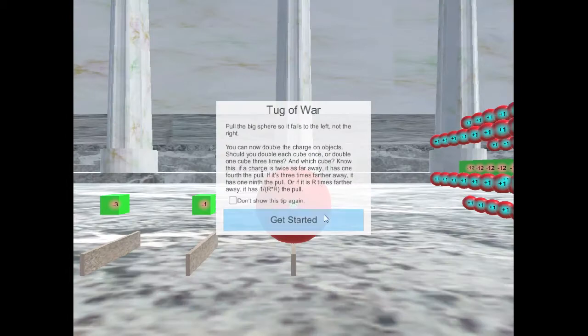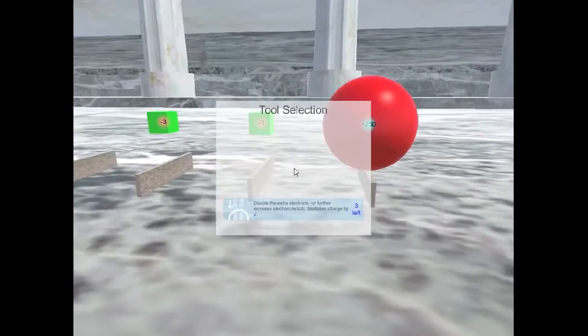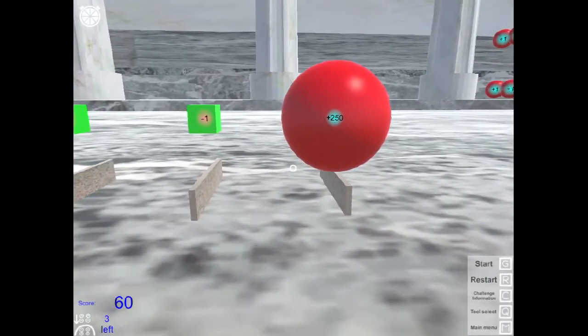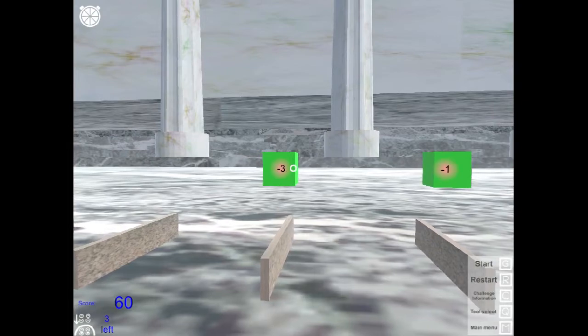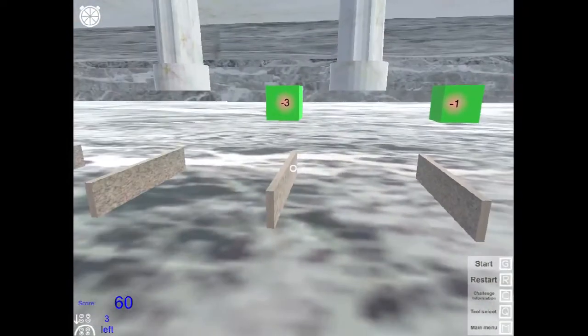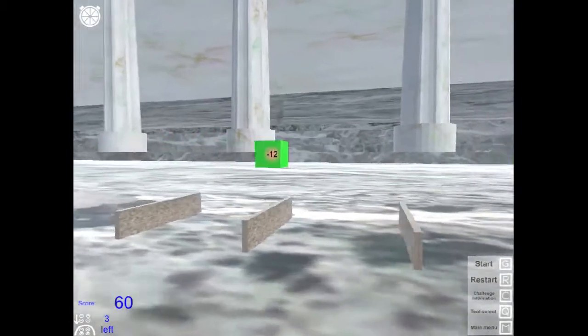For the tug-of-war level, this text explains the inverse square law, but basically here you can double a charge and you want to hold on to that big red ball. So do you want to double this one, or double this three, which is twice as far, or double this twelve, which is four times as far?